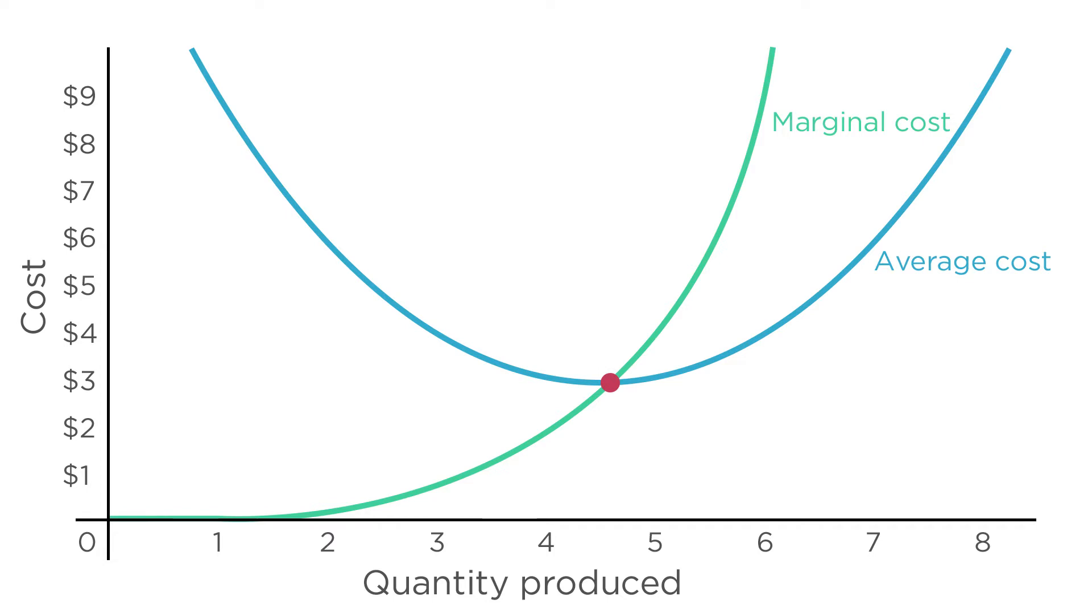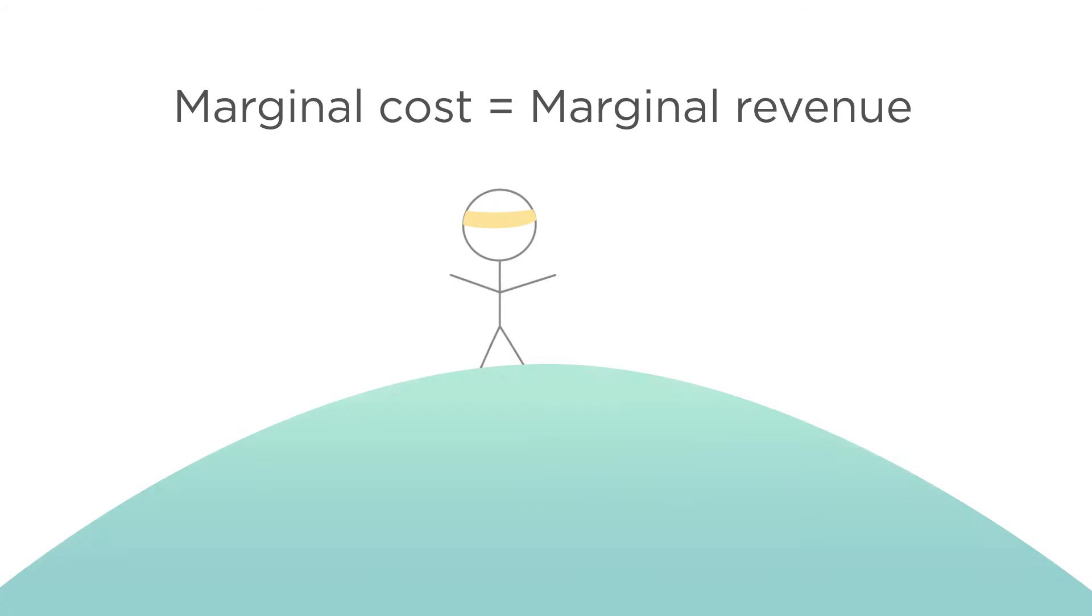This is all kind of interesting, but we still need to figure out how many units the golden snitch firm should produce. As we discussed a few lectures ago, a firm always wants to produce at the point where marginal costs equal marginal revenue. That is where it's climbed to the top of the hill. If the next unit brings in more revenue than it costs, the firm should definitely produce it.